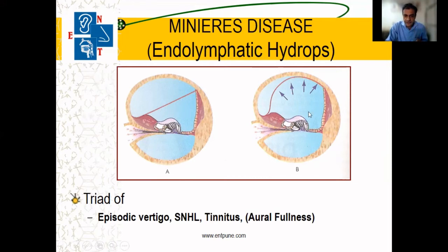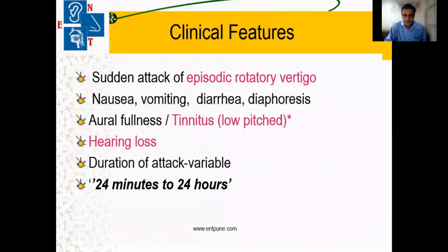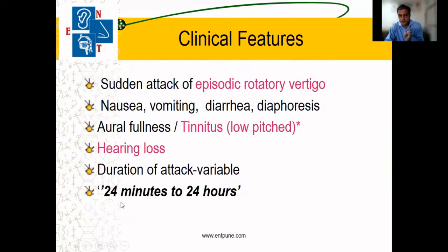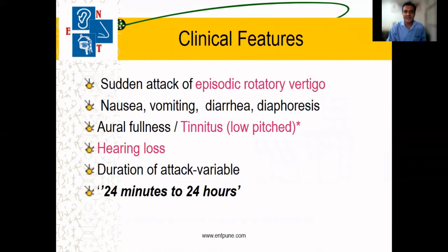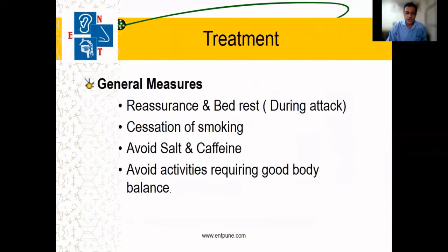This is mainly because the pressure in the endolymph fluid increases, leading to these symptoms. Typically the patient will have a rotatory kind of vertigo lasting from a few minutes to a few hours, and the combination of tinnitus, hearing loss, and vertigo will be diagnostic of Meniere's disease clinically.